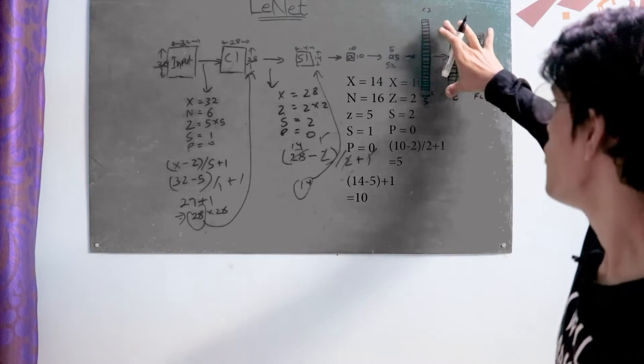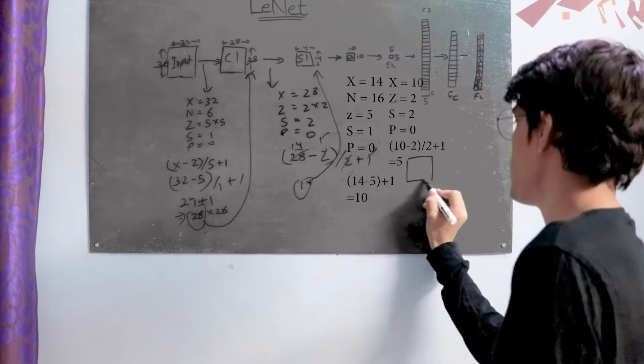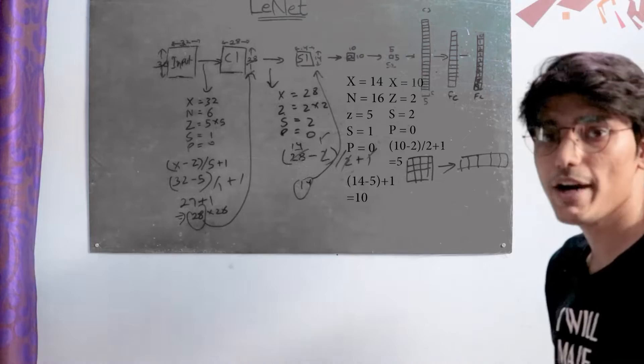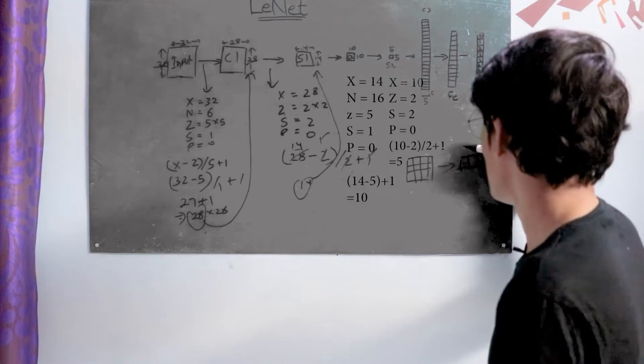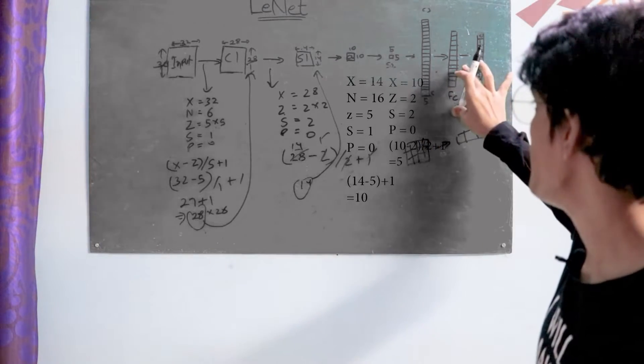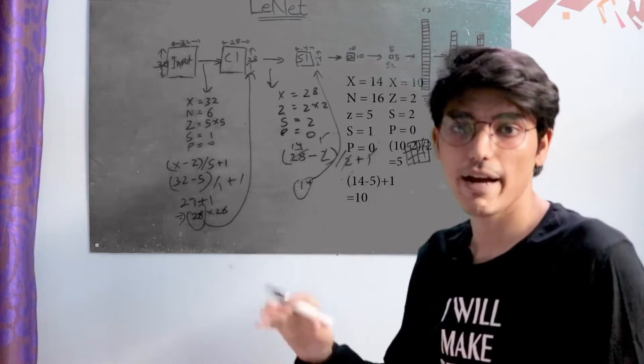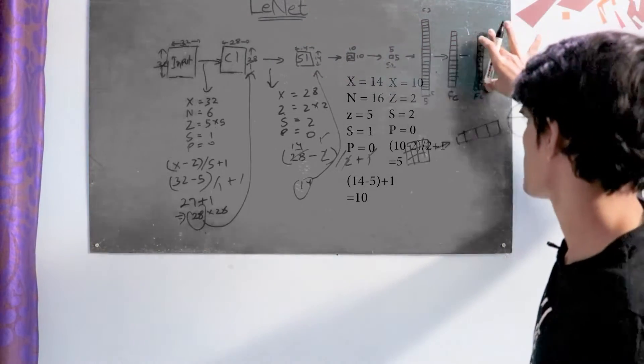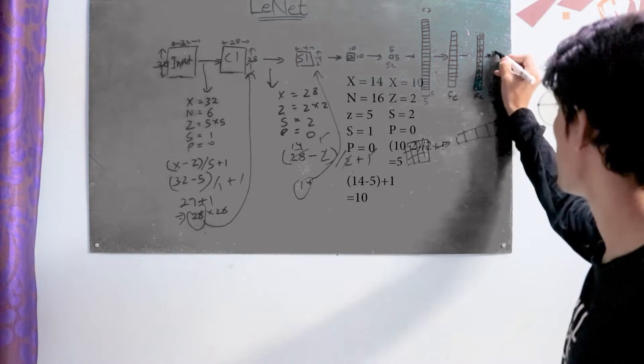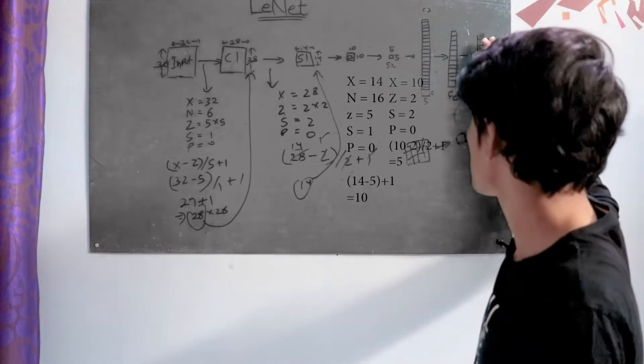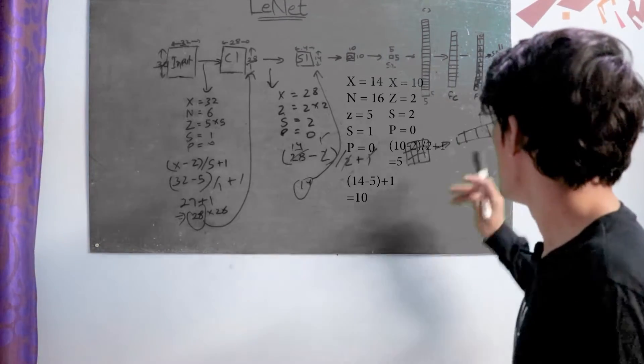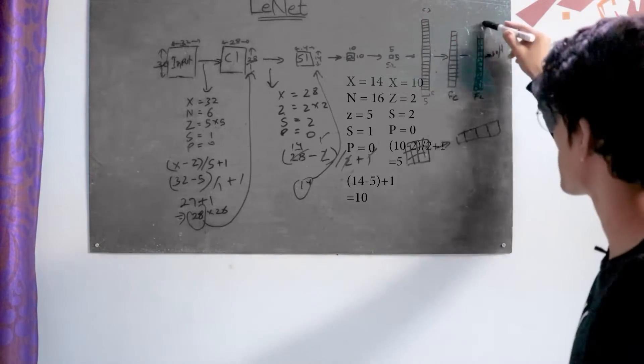Then we have a fully connected flattened layer which converts a 2D matrix into a 1D array of size 120. Next, we have a fully connected dense layer with activation function tanh. We could use ReLU here, but ReLU was not present back then. Then we have a softmax layer, which is the output or prediction layer. Softmax contains all possibilities of the classes. In our case, numbers 0 to 9. When we do prediction, it classifies one of these classes as output.